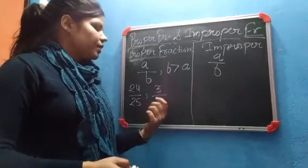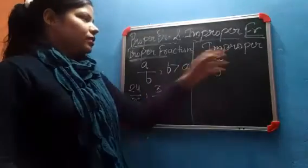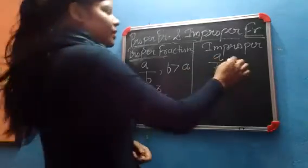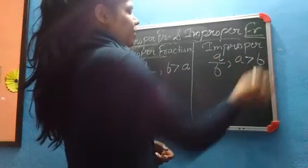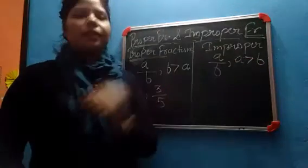3 by 5 because denominator is greater than numerator and just opposite it. Here numerator is greater than denominator.